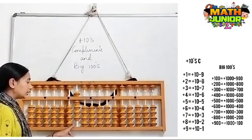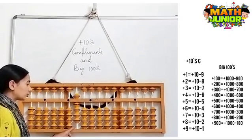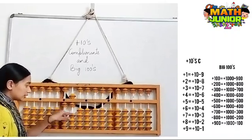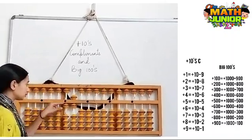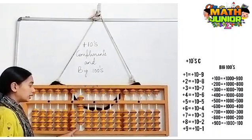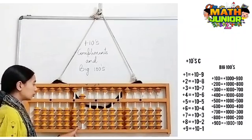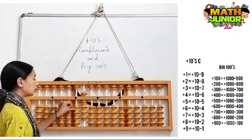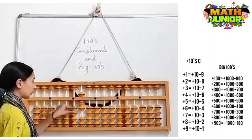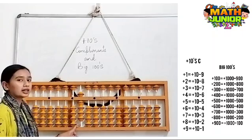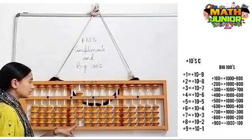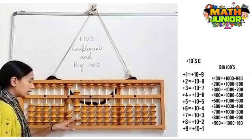I have 900 here and I need to add 700. So the formula for plus 700 is plus 1000 minus 300. Next, I have 900 here and I need to add 800. So the formula for plus 800 is plus 1000 minus 200. Next, I have 900 here and I need to add 900. So the formula for plus 900 is plus 1000 minus 100.